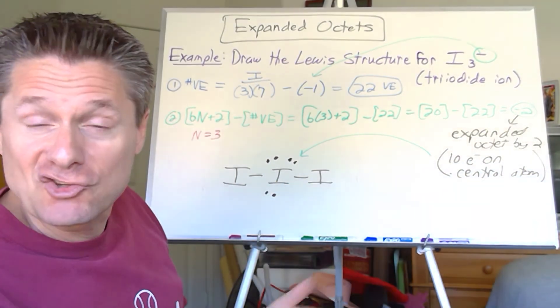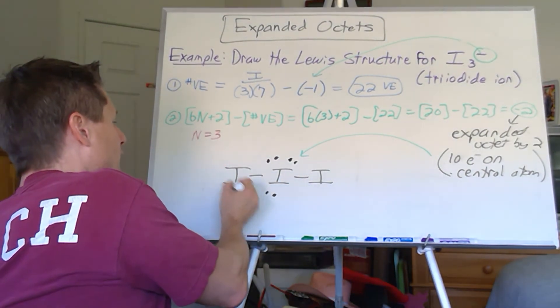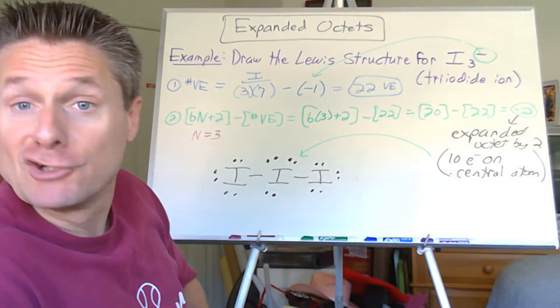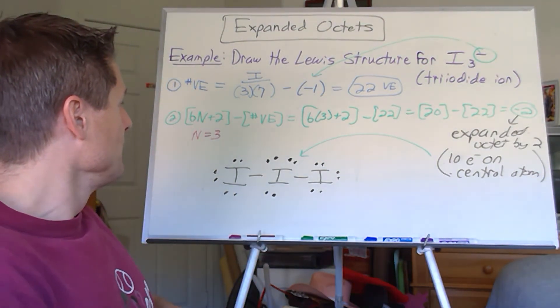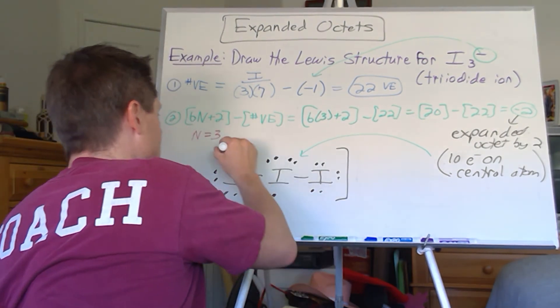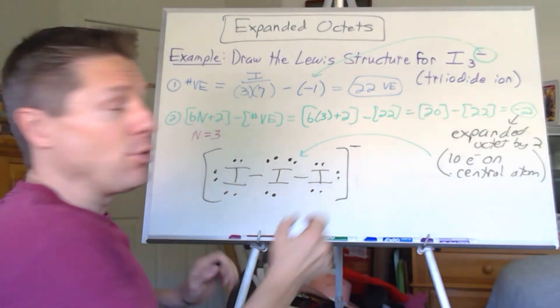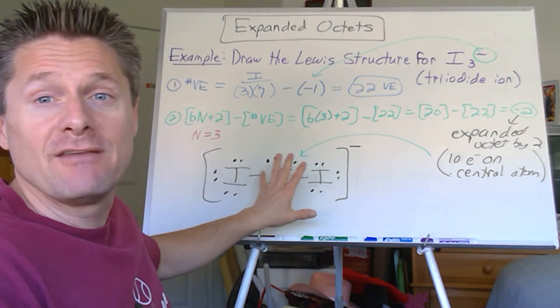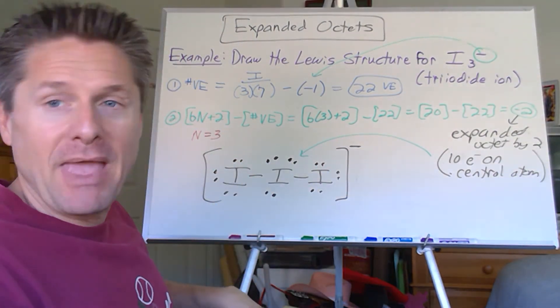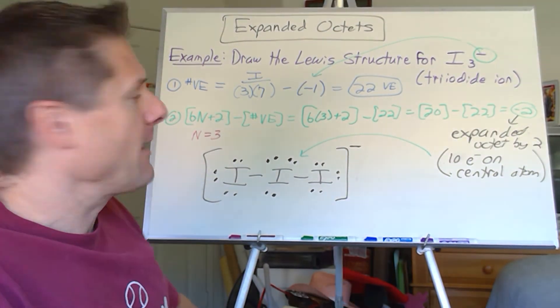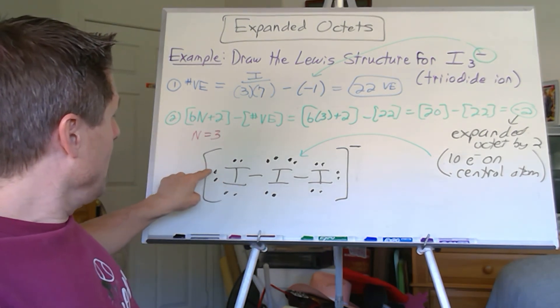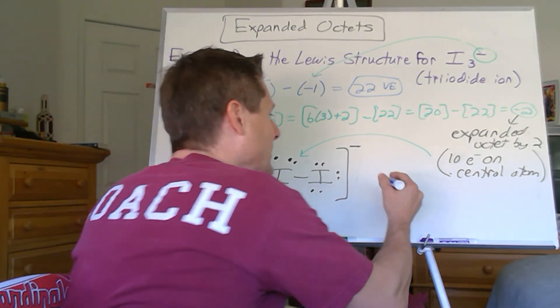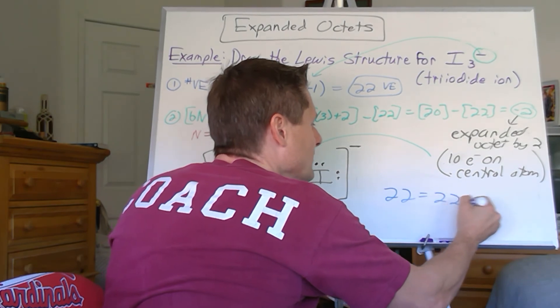Now the terminal iodines, we can just do the normal octet rule. So two, four, six, eight. Two, four, six, eight. So your typical terminal halogens, a single bond with three lone pairs. And this is a charged species. So you have to put it in brackets. When you have an anion or a cation, you got to put the Lewis structure in brackets. And that represents in order to achieve all the octets, preferred number of bonds, any expanded octets, et cetera, et cetera. We needed to pick up an extra electron. Where from? Don't worry about that. So how many did we use? Two, four, six, eight, 10, 12, 14, 16, 18, 20, 22 equals 22. Hallelujah. So 22 equals 22. Boop.